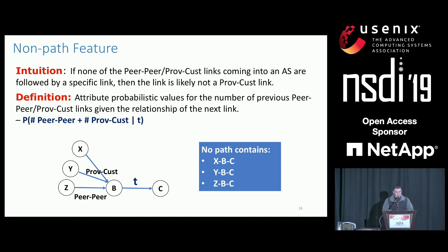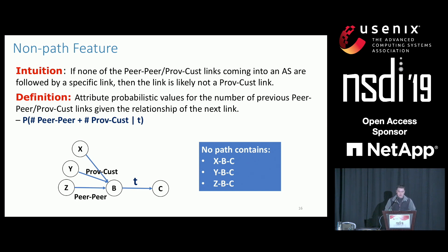In addition to observed routes, unobserved routes also provide some information regarding AS relationships. The intuition behind the non-path feature is that if none of the peer-to-peer and provider-to-customer links coming into an AS are followed by a specific link, then this link is likely not a provider-to-customer link. For example, we can see a bunch of provider-to-customer links and peer-to-peer links coming into node B, but we do not see the link BC following these links in any BGP paths. Then the link BC is unlikely to be a provider-to-customer link. This is another probabilistic way of modeling the valley-free assumption, but it considers the absence of a path as informative, as opposed to the presence of a certain kind of path.